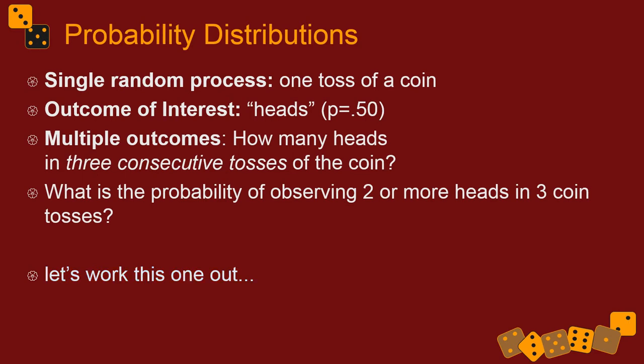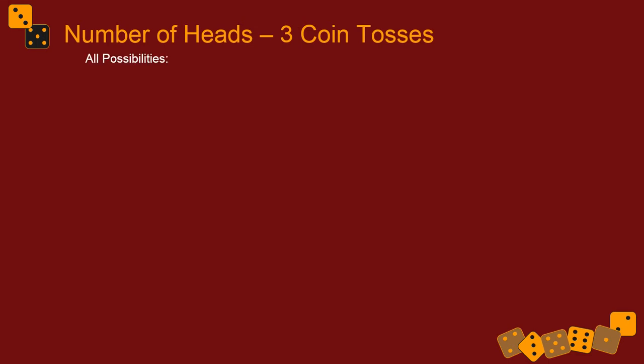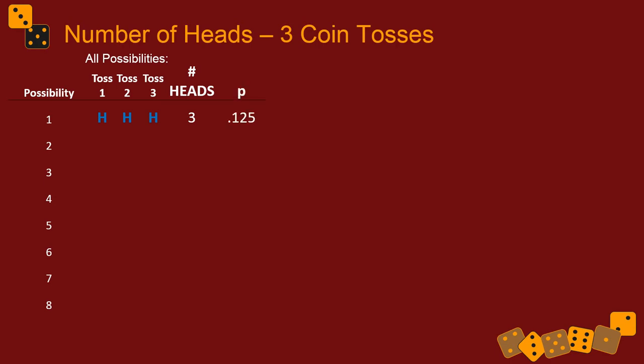Let's list all the possibilities on three tosses of a coin. It turns out there are eight things that can happen. In the columns, I've got the three tosses: toss one, toss two, toss three. One possibility is you could get heads, heads, and heads. Since there are eight things that could happen, the probability of that particular outcome — three heads — is one-eighth, which is 0.125. So there's a one in eight probability that you'll get all three heads.